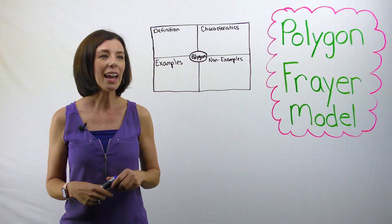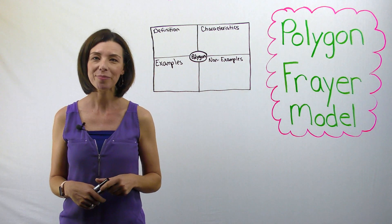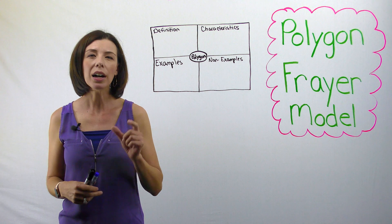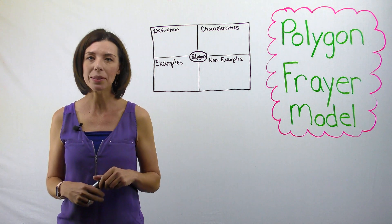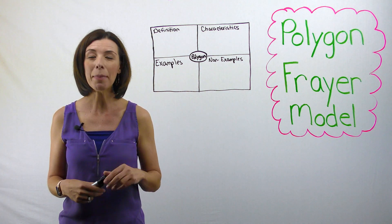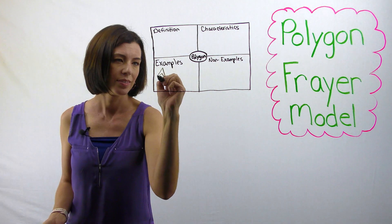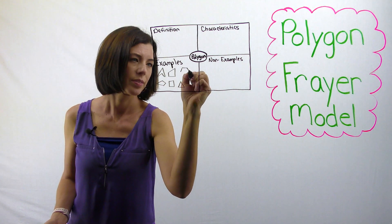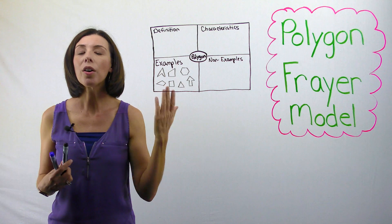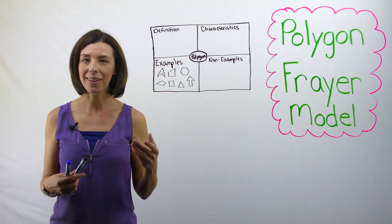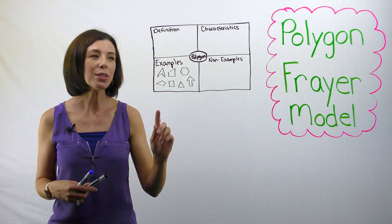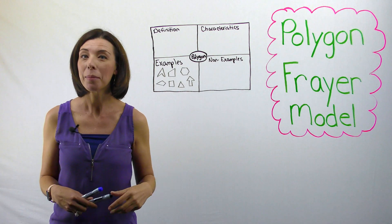So, let's look at the term polygon. You should have a little image with some shapes on it that are polygons. They might look something like this. What I just drew are all examples of polygons. Now let me show you some shapes that are not polygons.